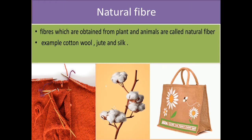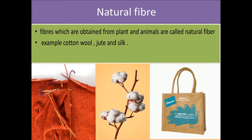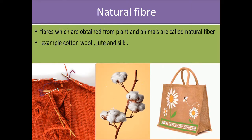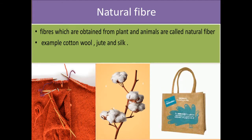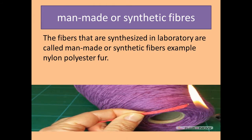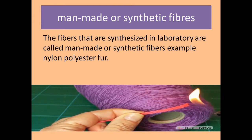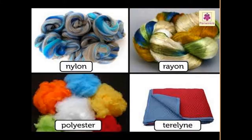Natural fibers are fibers which are obtained from animals or plants. Examples include cotton, wool, jute, and silk. Manmade or synthetic fibers are fibers that are synthesized in a laboratory. Examples include nylon, polyester, and fur.